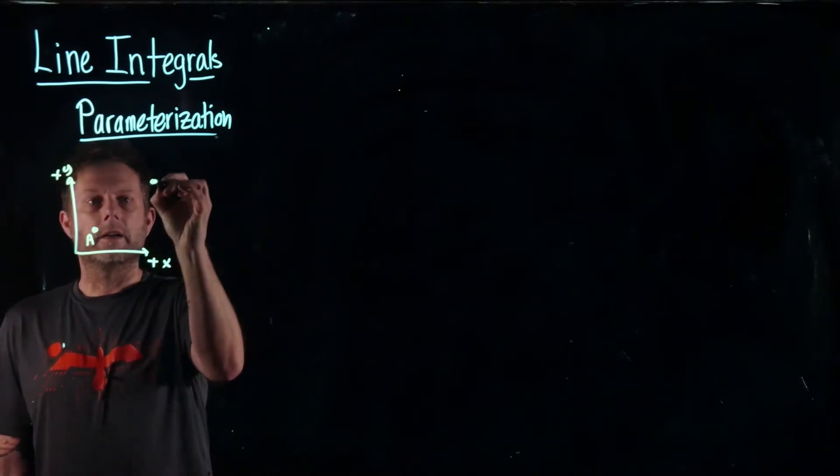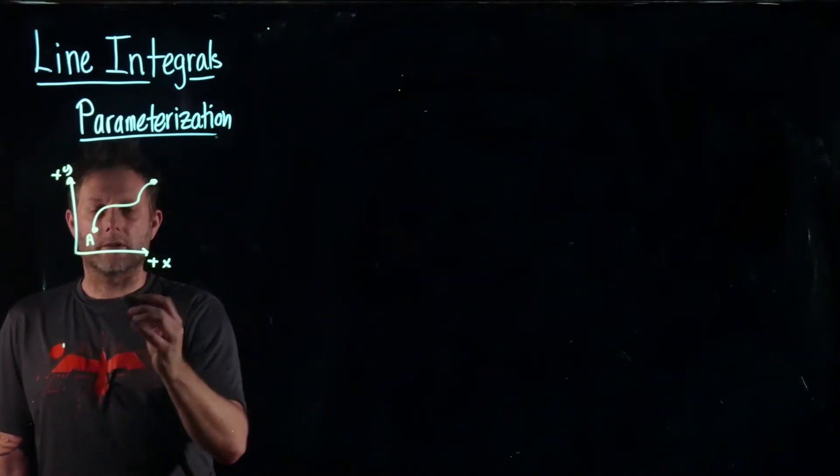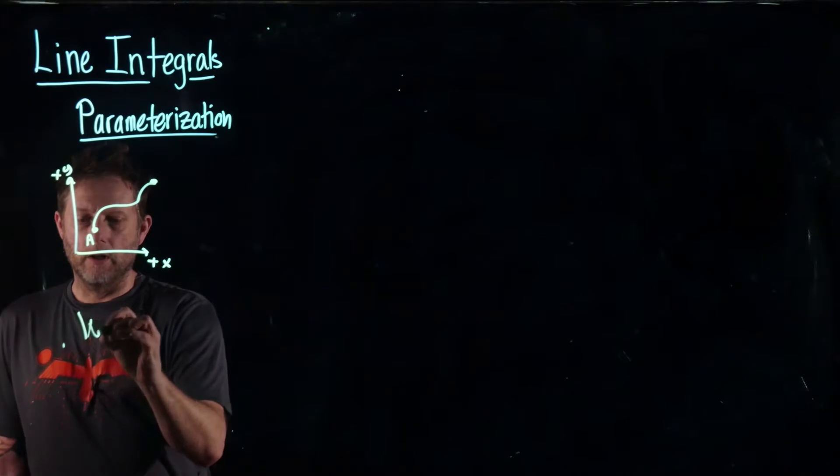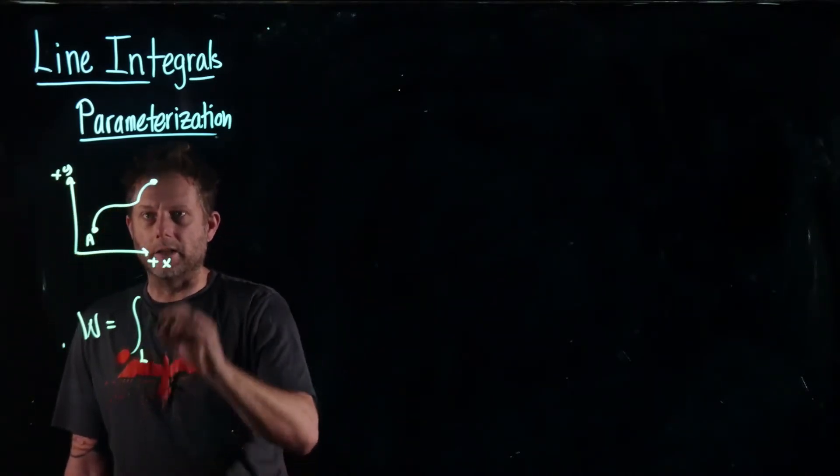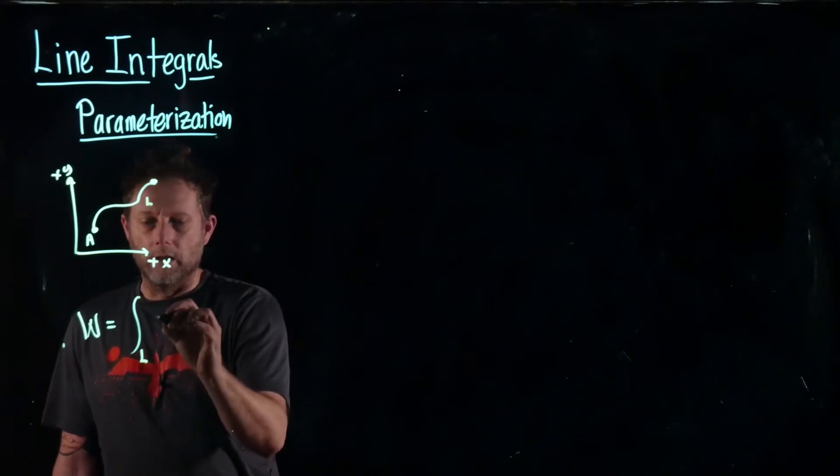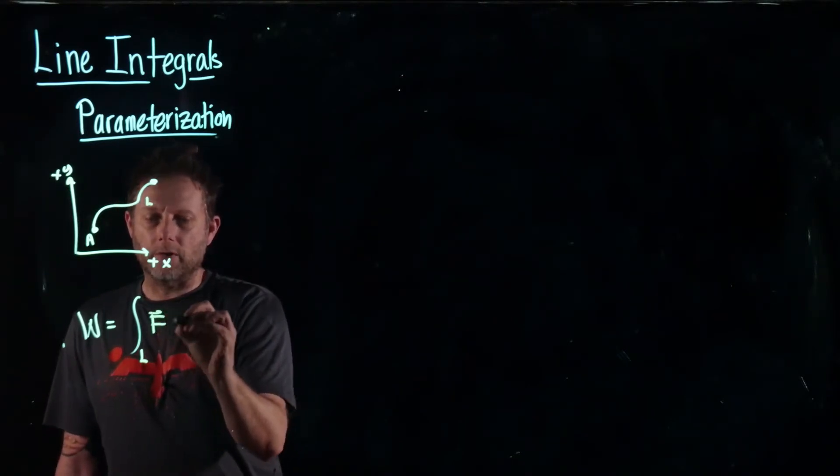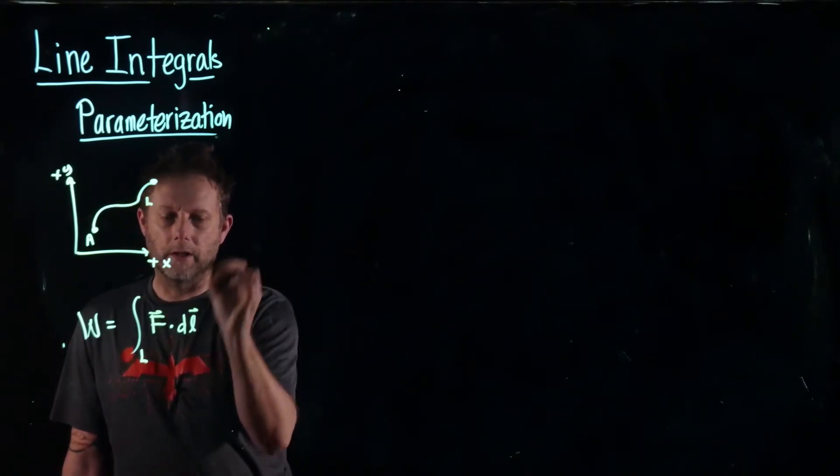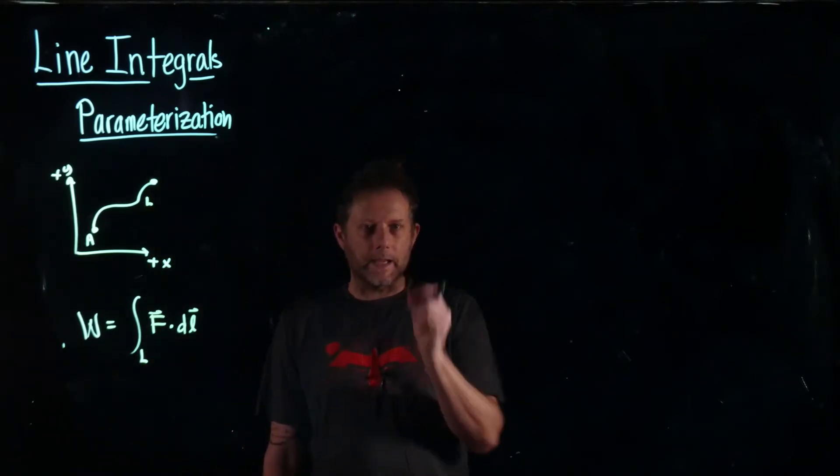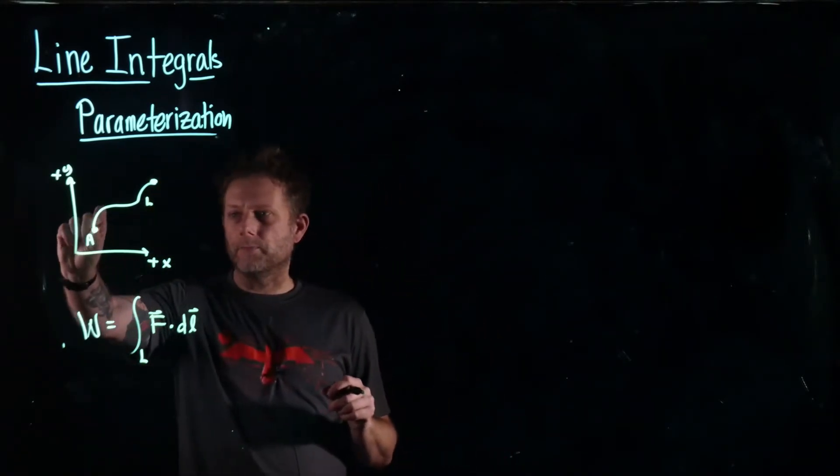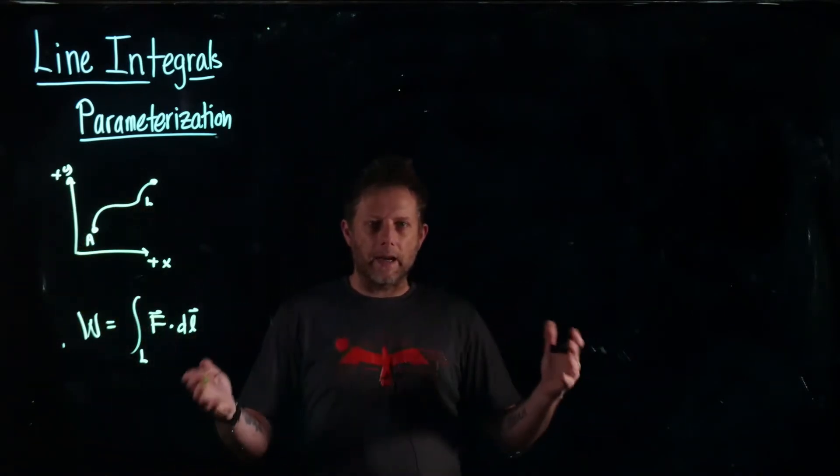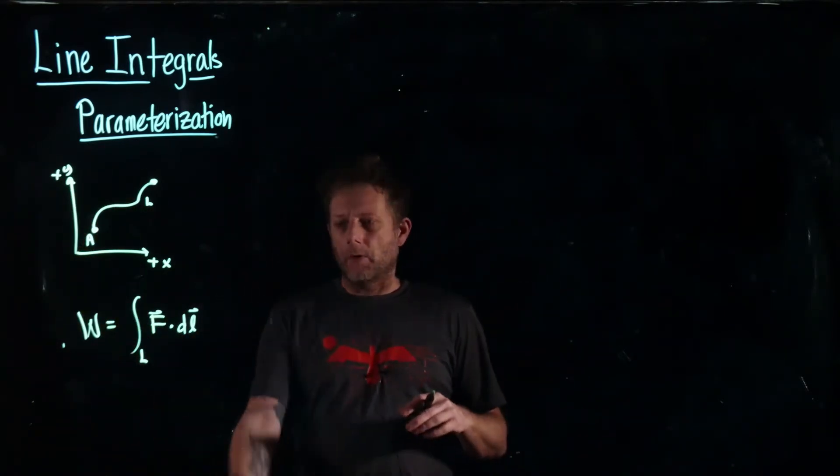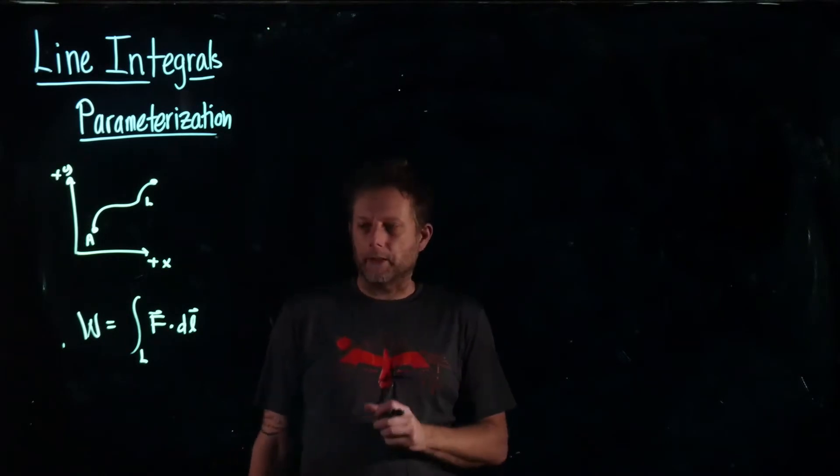We go from point A to point B and we always consider so far the work as being the integral along this line called L of the force dotted with the infinitesimal line segment. So we just calculate the work along a bunch of tiny little line segments and adding them up becomes our integral when we're considering infinitesimal line segments.